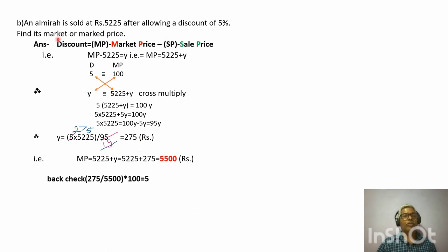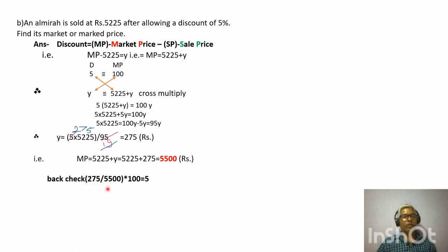We have to find the market price, not just the discount. So market price = 5,225 + y = 5,225 + 275 = 5,500 rupees. Always write the units in your answer — rupees, centimeters, percentage, kilometers, or whatever applies — otherwise you lose marks. To back-check: 275 divided by 5,500 × 100 = 5 percent, which matches the given discount.